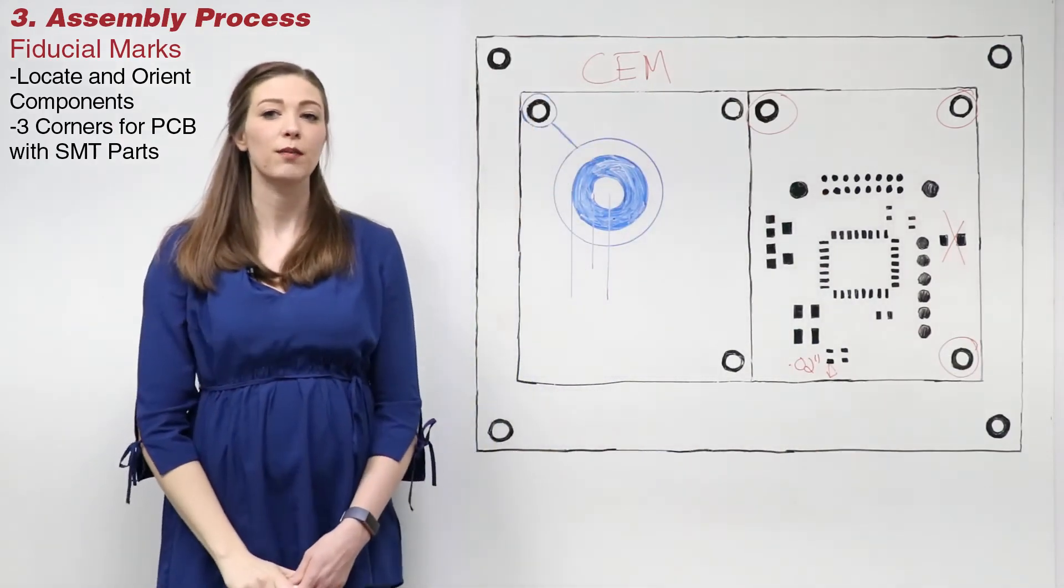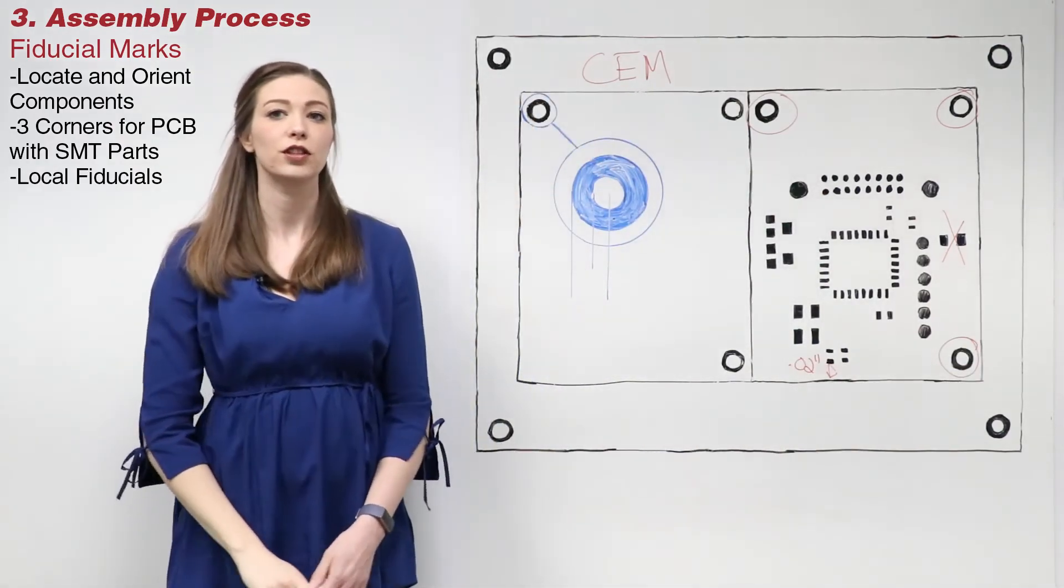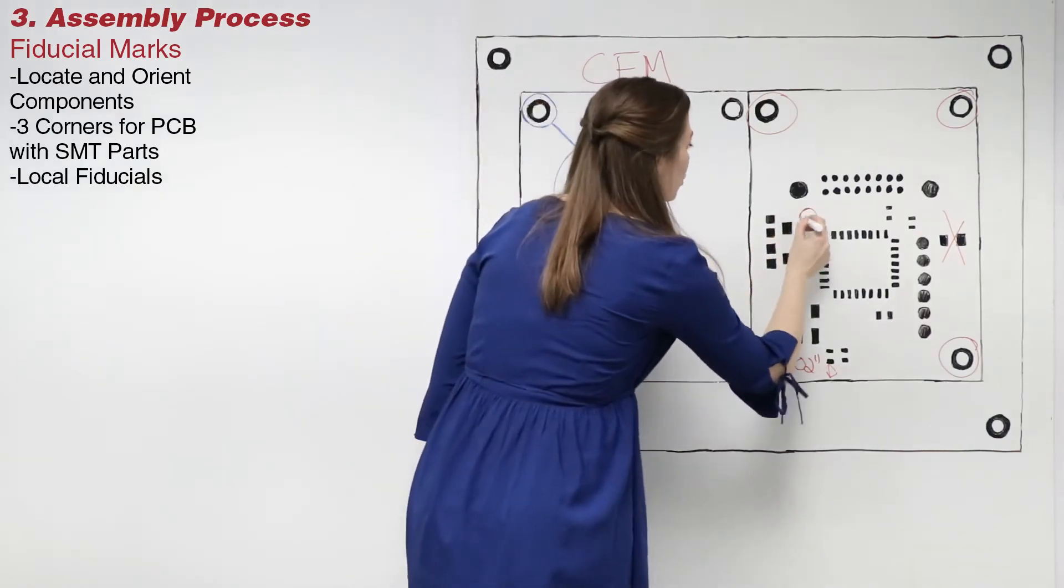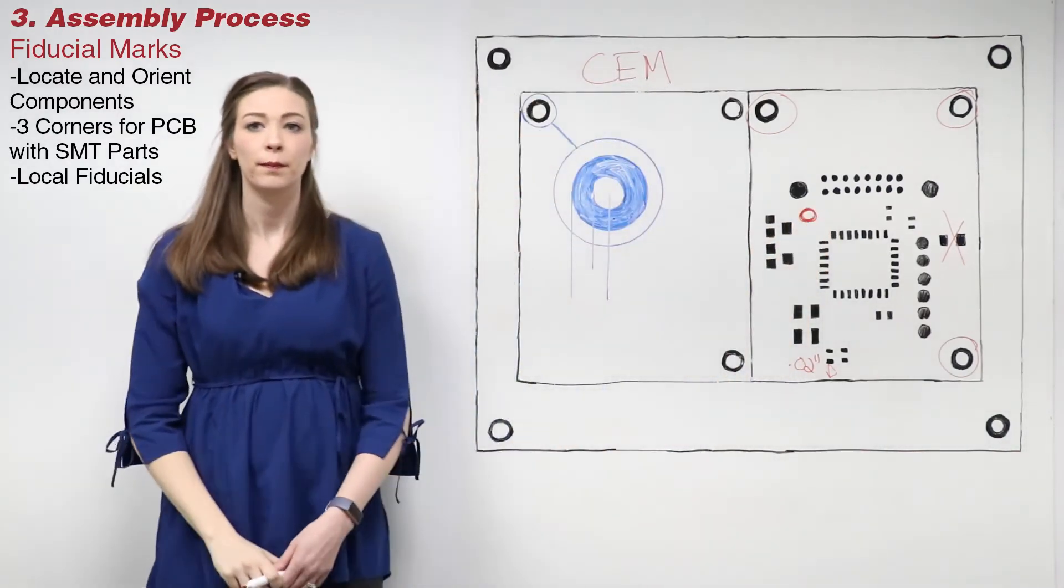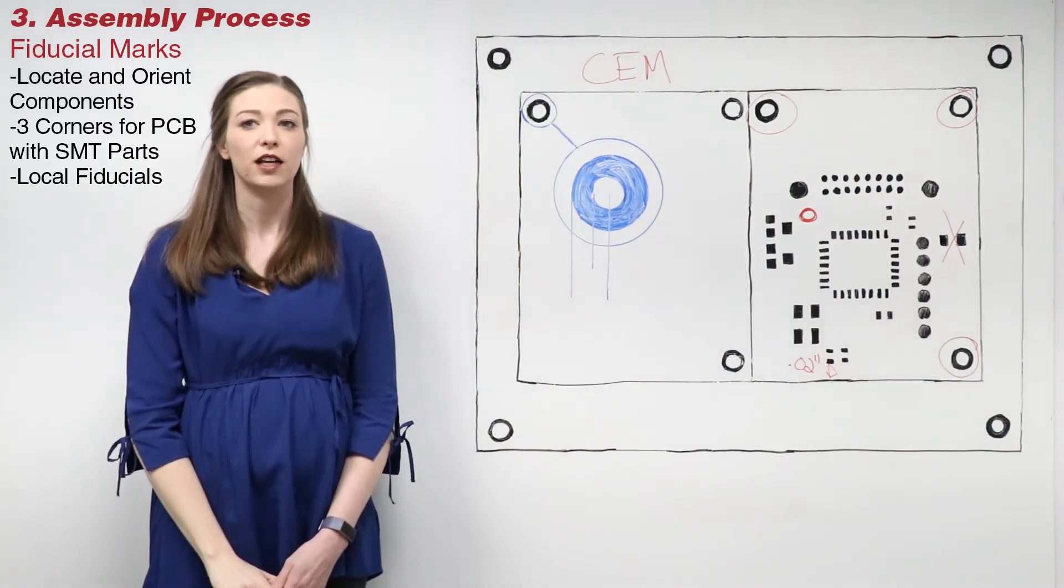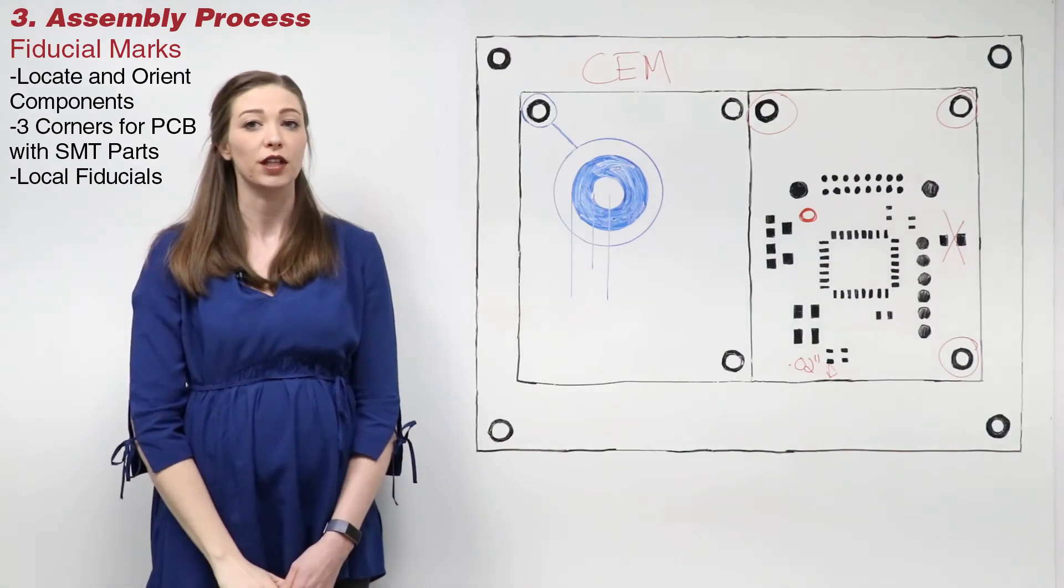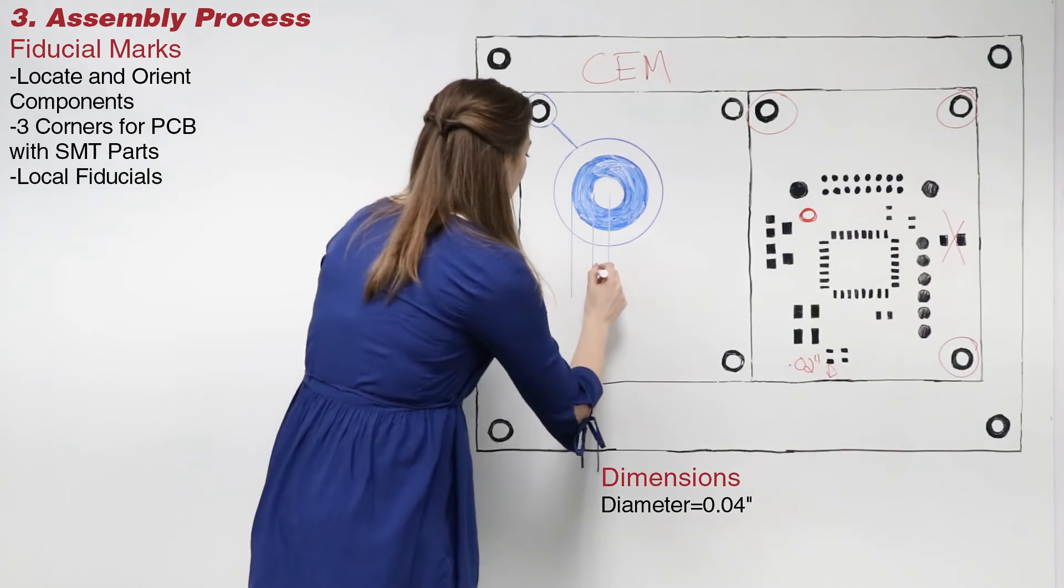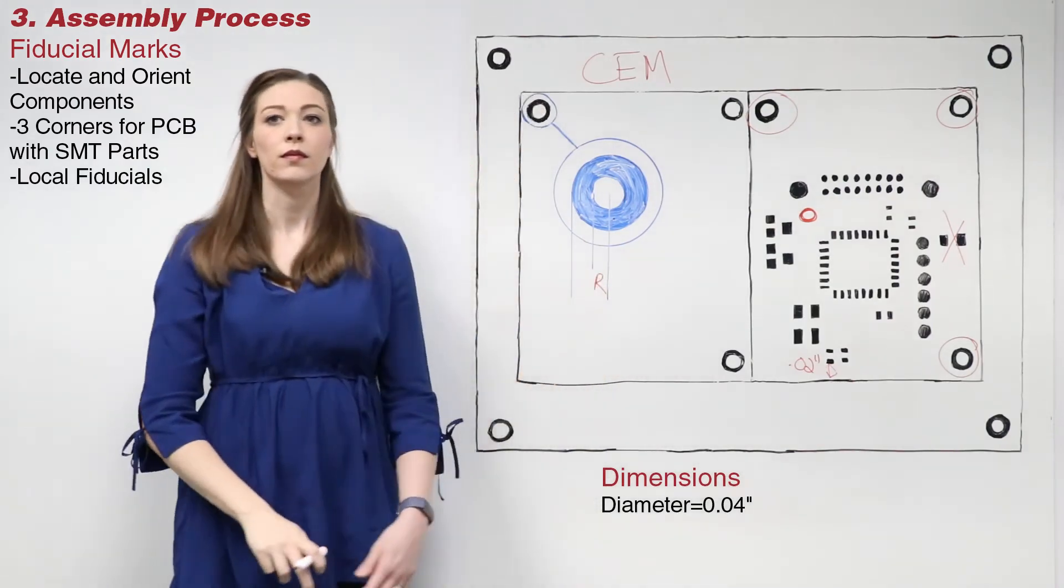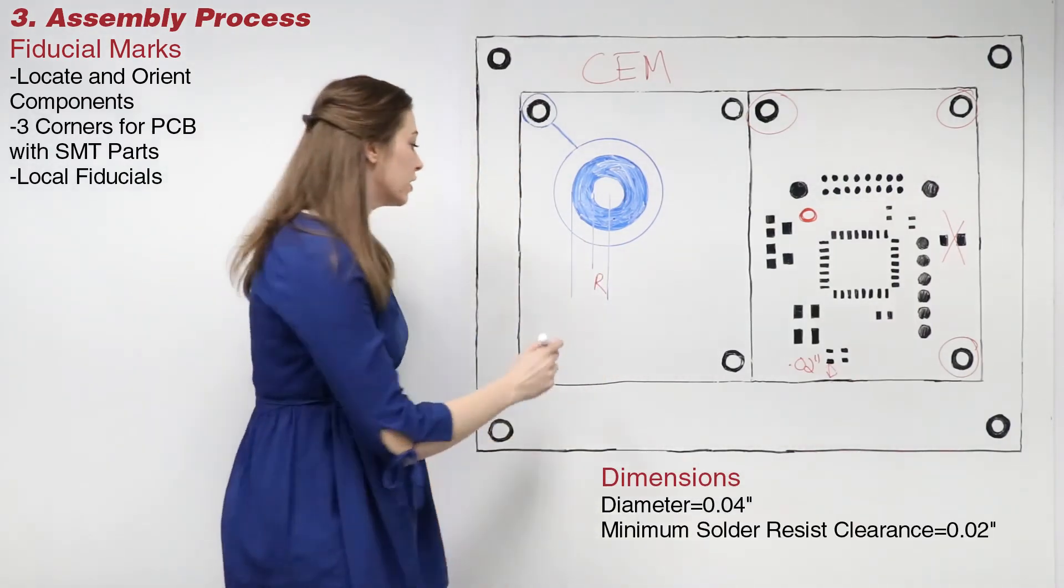It is important to note that some manufacturers will request local fiducials in the corner of fine-pitched parts for proper placement. If a fiducial is placed off-board on the manufacturing panel, this is used to indicate stuff or no-stuff options on the assembly. The typical diameter of a fiducial is 0.04. The minimum solder resist clearance is 0.02.